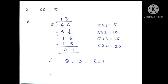We have to recall the table of 5. Here what is the first digit? 6. See the table: 5 ones are 5, 5 twos are 10. Compared to 6, 10 is a bigger number. So we have to take 5 ones are 5. This 1 we write above the line, and this 5 we write below the 6. Then subtract: 6 minus 5 is 1. Then we drop the 6 down — it becomes 16.